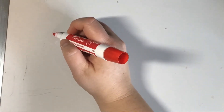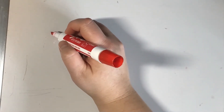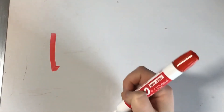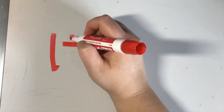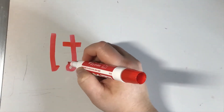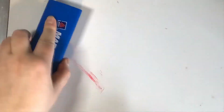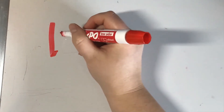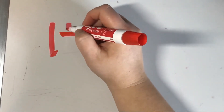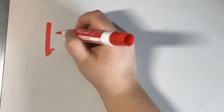First is ha, which is in two pieces. Similar to ke: go top to bottom with a little tick at the bottom. Then do a small line going left to right, and another line going through. At the bottom, loop it around. So: top to bottom, small left to right, top to bottom with a loop at the end. That's ha.